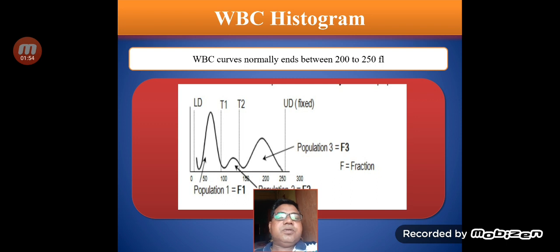In the WBC histogram, we can see three cell populations represented as fractions F1, F2, and F3. The F1 fraction is basically the small lymphocytes, the F2 fraction is composed of eosinophils, basophils, and monocytes, and the F3 fraction consists of neutrophils. The ending of this curve is very important — the WBC curve basically ends between 200 to 250 femtolitres.